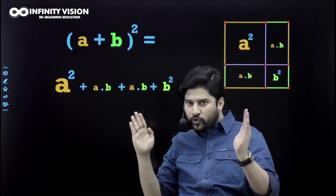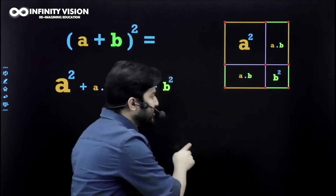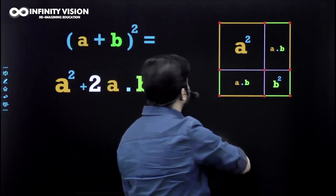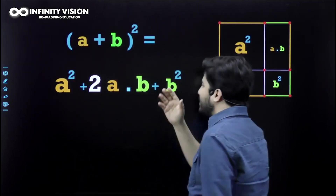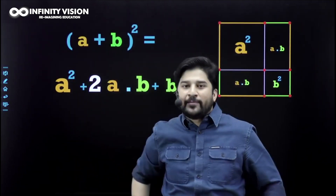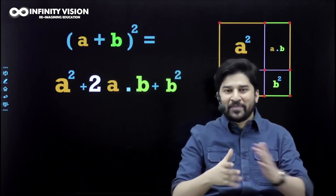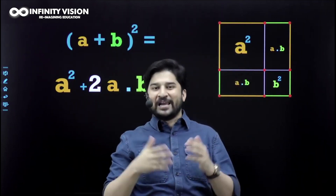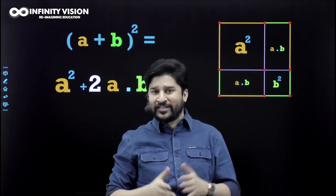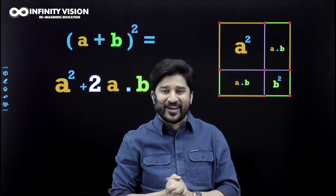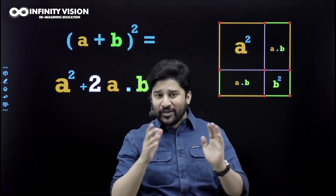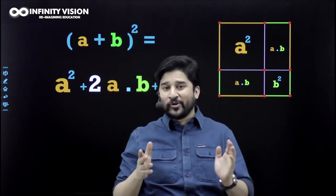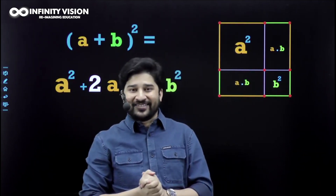Since ab plus ab are the same, adding them gives twice ab. So a plus b whole square equals a squared plus 2ab plus b squared. This is making sense, right? Now can you do the same drill for a minus b whole square? Go and do it!